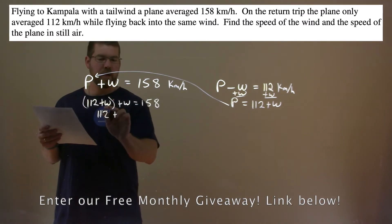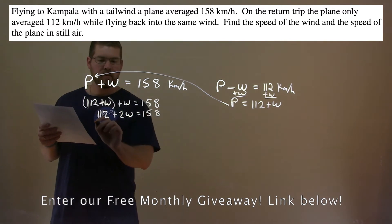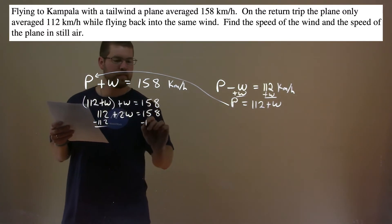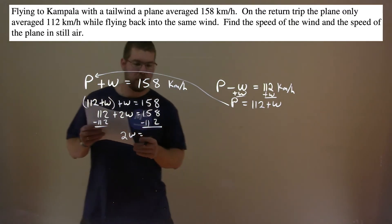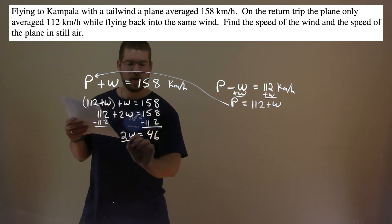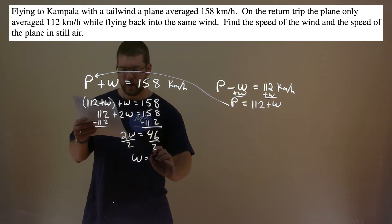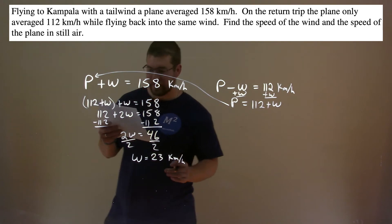112 plus W plus W is 2W equals 158. Subtract the 112 to both sides. 2W equals 158 minus 112, which comes out to be 46. Divide both sides by 2. And W equals 23. And that's kilometers per hour. And that's the speed of the wind.